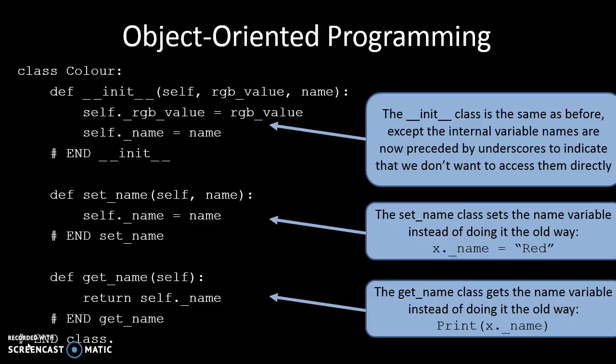Our set_name, as you can see, sets the name — instead of doing x.underscore_name = 'red', we do set_name('red'). And instead of doing print x.underscore_name, we just call get_name.